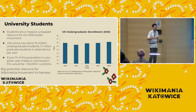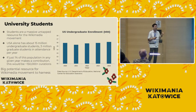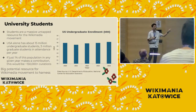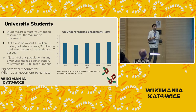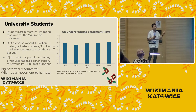University students are a massive untapped resource for the Wikipedia movement. The United States alone has about 15 million undergraduate students as well as 3 million graduate students in attendance per year. If just 1% of this student population in any given year were to make a contribution — and this doesn't have to be the same people every year — this would be 150,000 or more contributions, expressed as article curations, images uploaded to Wikimedia Commons, and more.